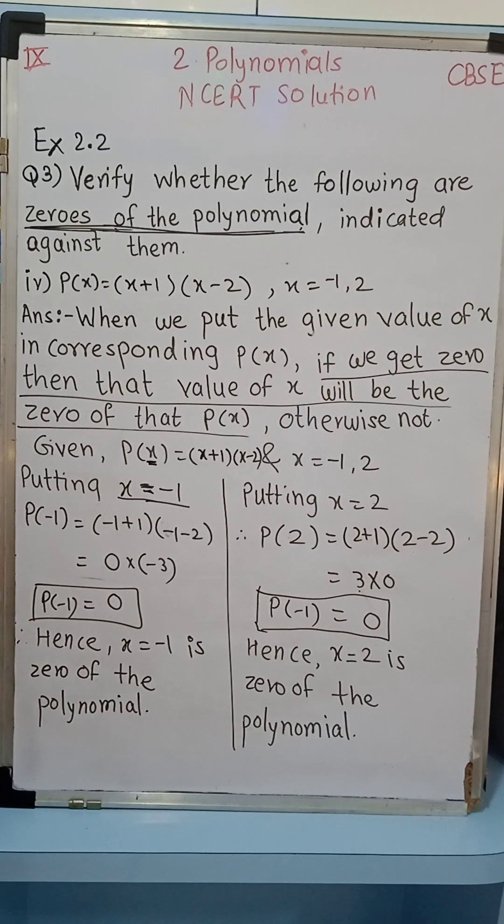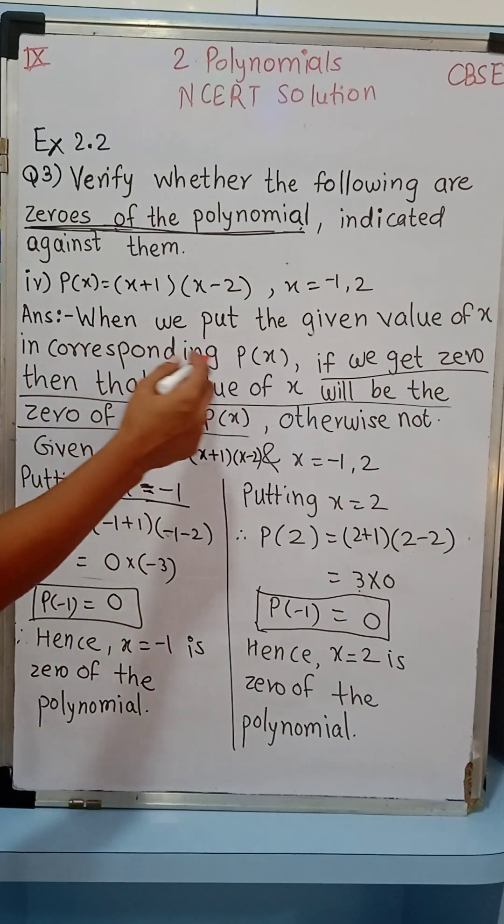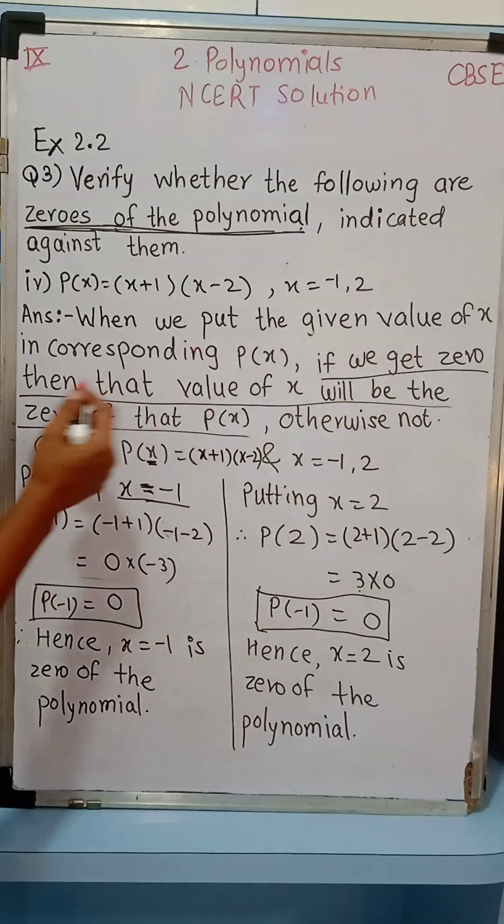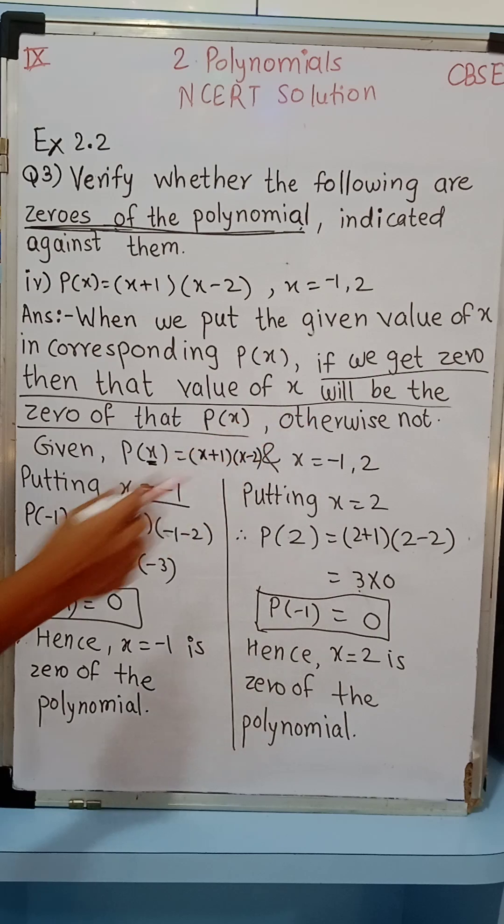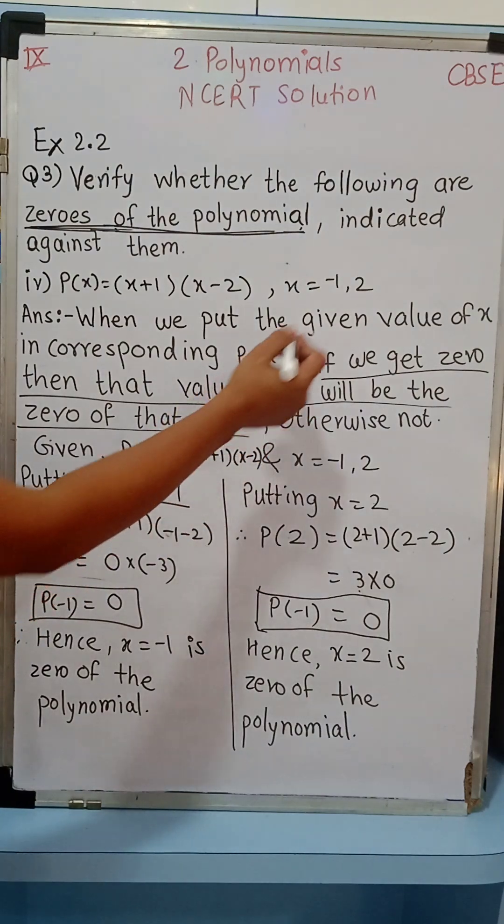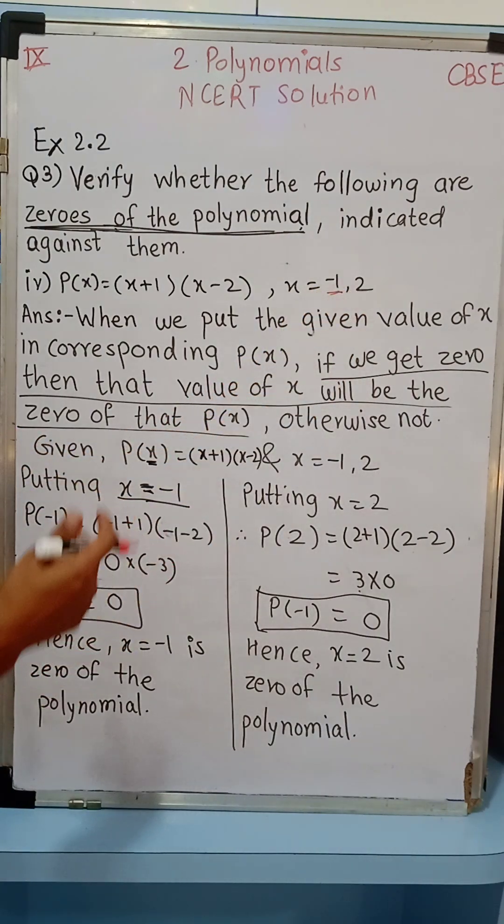When we put the given value of x in the corresponding P(x), if we get 0, then that value of x will be the zero of that polynomial P(x), otherwise not. Let's quickly check for both the values minus 1, we will solve one by one.